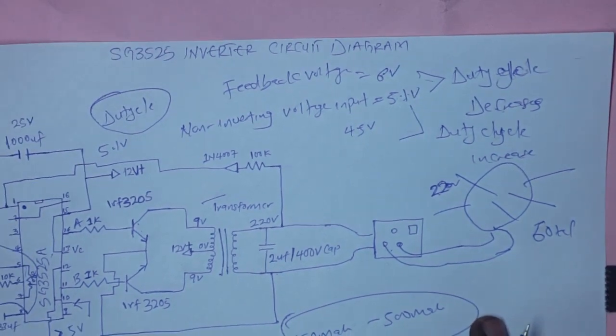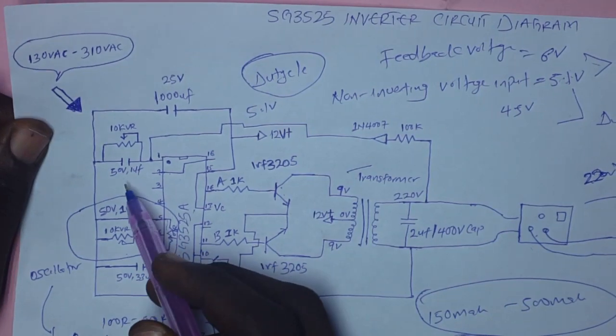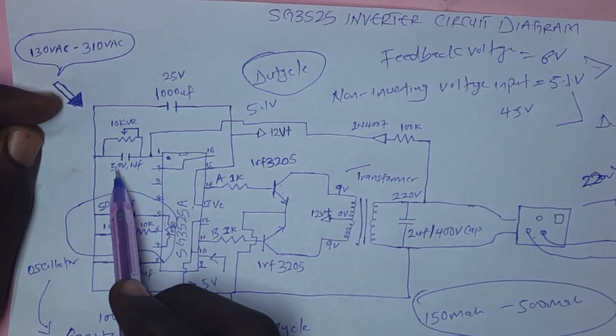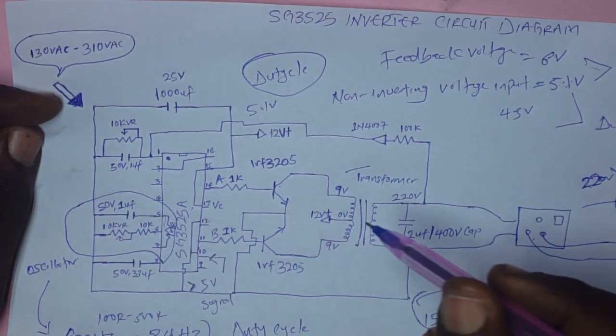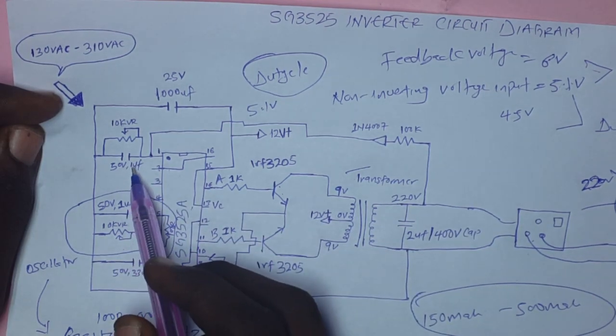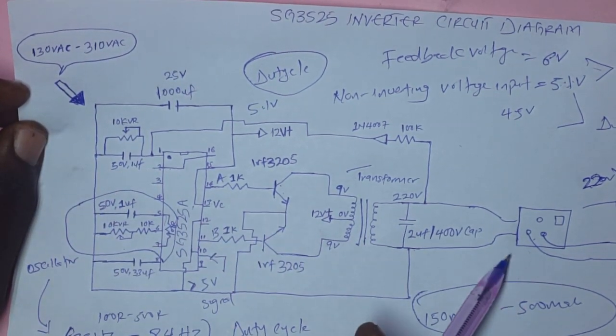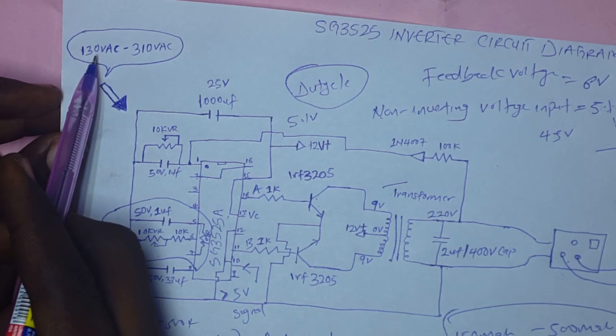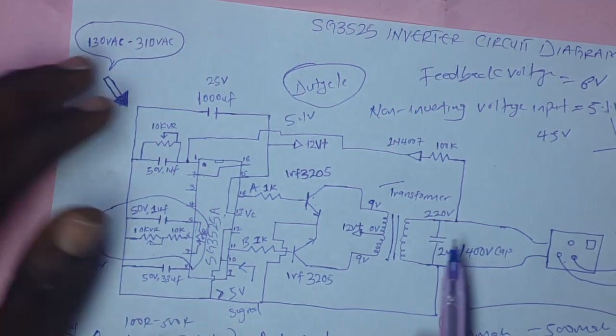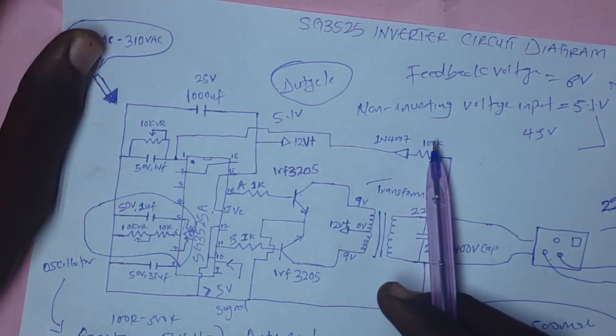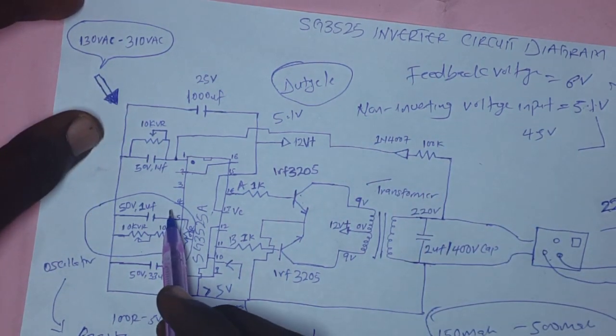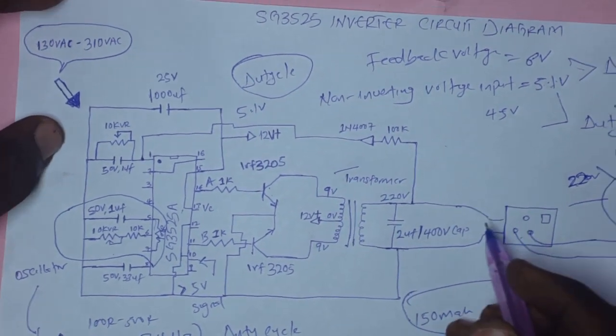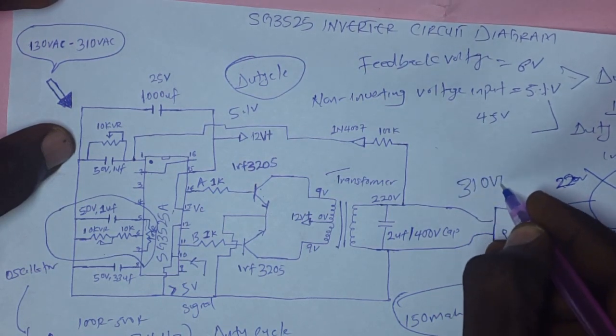Now, another thing is that if you look at this feedback, you can see that with the changes of the voltage being adjusted, it will affect the output voltage. However, you will be able to control the output voltage from about 110-130 volts to 310 volts. Because initially, when you build this circuit, this inverter without the feedback connection, you will be getting a voltage of about 310 volts AC.